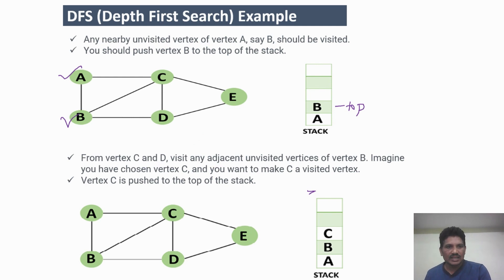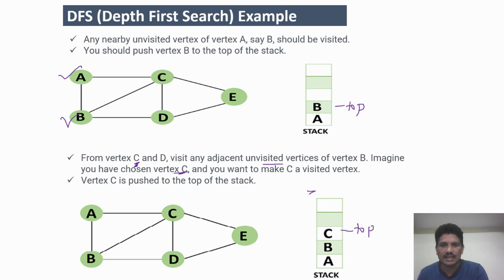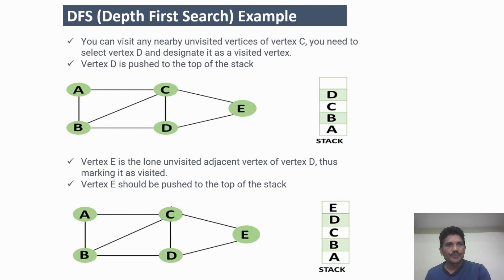From vertex B, visit any adjacent vertex — you can choose either C or D. For example, I have chosen C. Once I visit C, push it into the stack. C is now the top element of the stack. A, B, and C have all been visited. The next step is to visit any nearby unvisited vertex of C — the two unvisited vertices remaining in the graph are D and E.